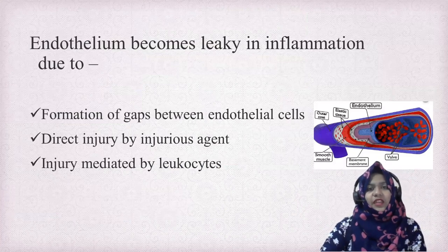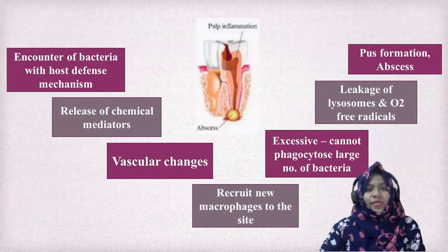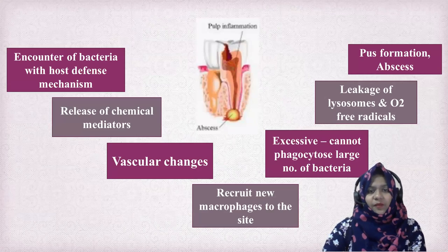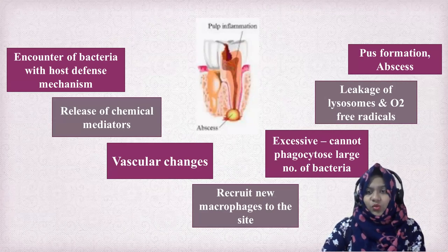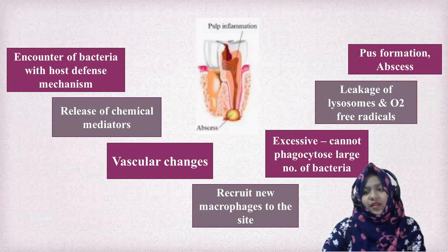The endothelium becomes leaky in inflammation due to formation of gaps, direct injury, or injury mediated by leukocytes. When bacteria encounter the host defense mechanism, there is release of certain chemical mediators, leading to vascular changes, which recruits new macrophages to the site. When they are excessive, they cannot phagocytose large numbers of bacteria, leading to leakage of lysosomes and oxygen-free radicals, leading to pus formation, abscess, and endodontic flare-up.